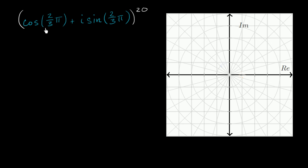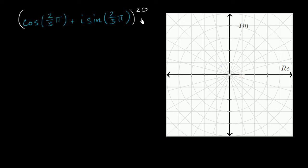So I have the complex number cosine of two pi over three, or two-thirds pi, plus i sine of two-thirds pi, and I'm going to raise that to the 20th power. What I want to do is first plot this number in blue on the complex plane, then figure out what it is raised to the 20th power, and then try to plot that. I encourage you to pause this video and try this out on your own before I work through it.